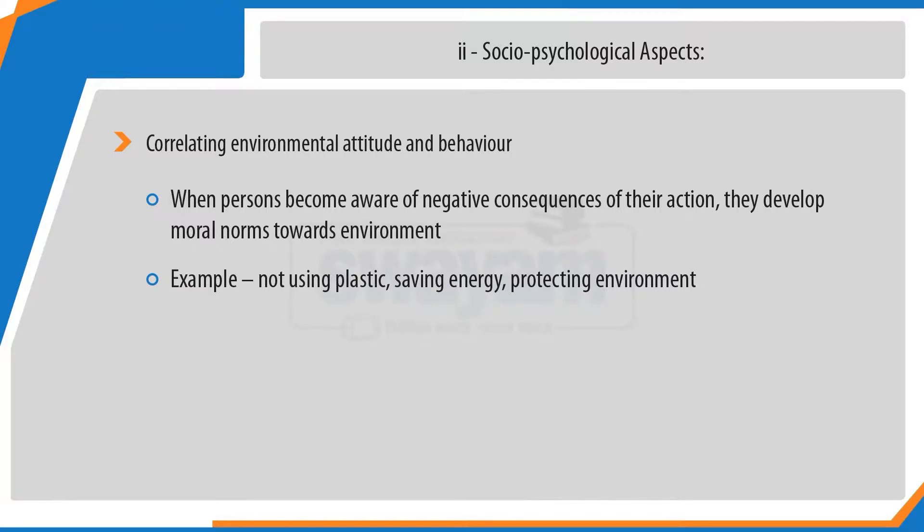The socio-psychological aspects of environmental attitude and values examine the correlation between attitudes and actual behavior. For example, when persons become aware of the negative consequences of their actions, maybe they develop certain moral norms and moral behaviors towards the environment — such as not using plastic, saving energy, or protecting the environment. These kinds of attitudes emerge only when we recognize the negative consequences of our behavior.